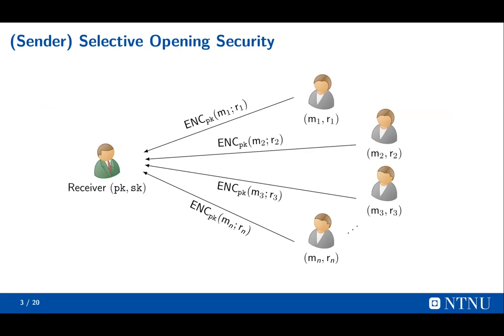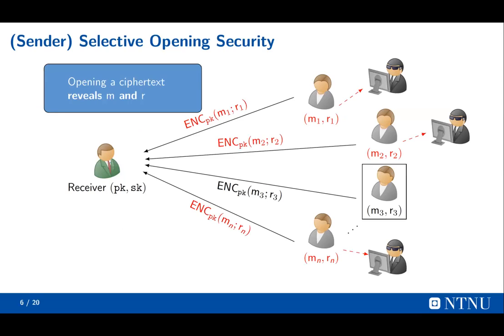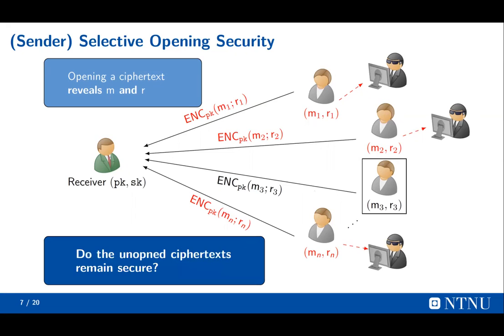We consider a setting where the sender's randomness and message will be revealed to some adversaries. Because the adversaries get the message and randomness, they can completely break the security of the ciphertext. We say a ciphertext is open if its randomness and message are both revealed. So now some ciphertexts are open, and we ask: do the unopened ciphertexts remain secure?